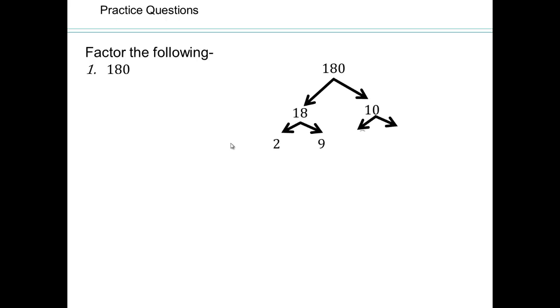So 180 has a 0 in the last spot, so we know 10 goes into it. 18 times 10, last digit is even, so 2 goes into it. 2 times 9 is 18, and 9 is 3 times 3. 10 we already know is 2 times 5, so 180 is going to be 2² times 3² times 5.